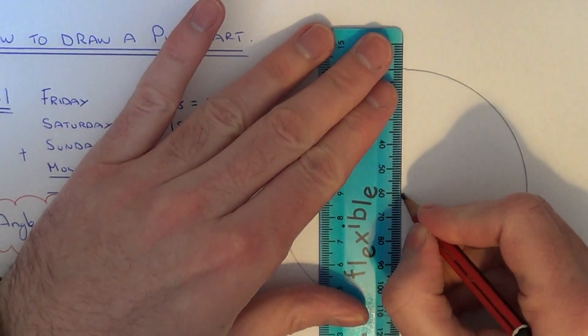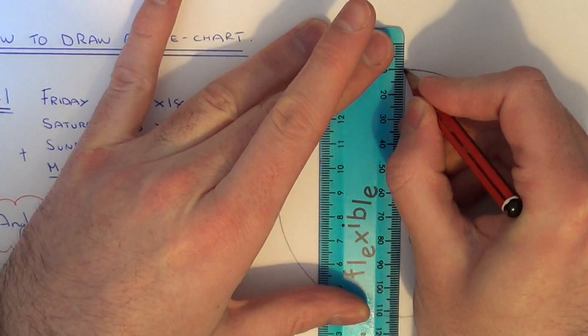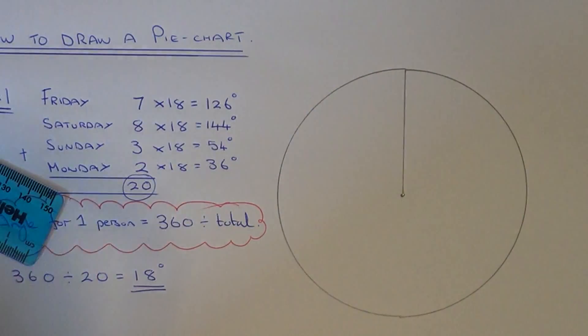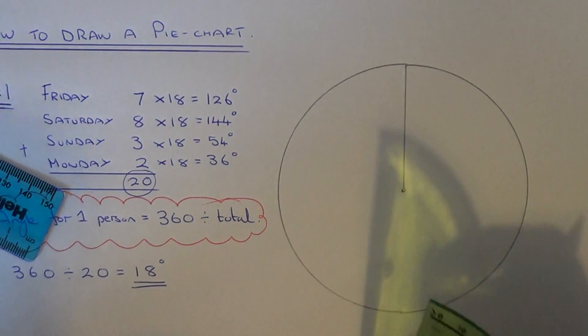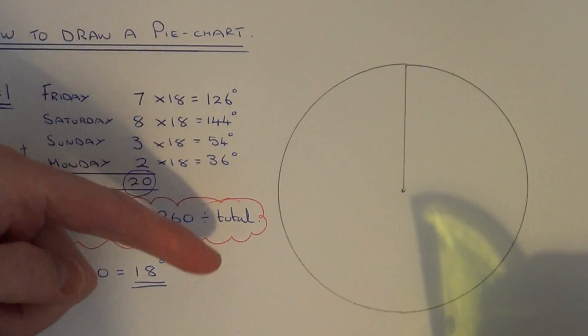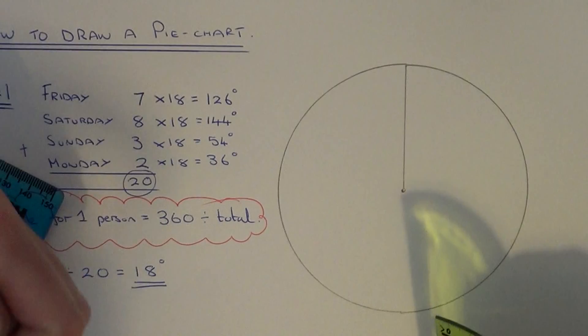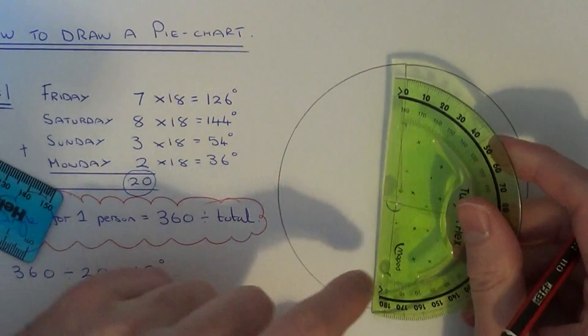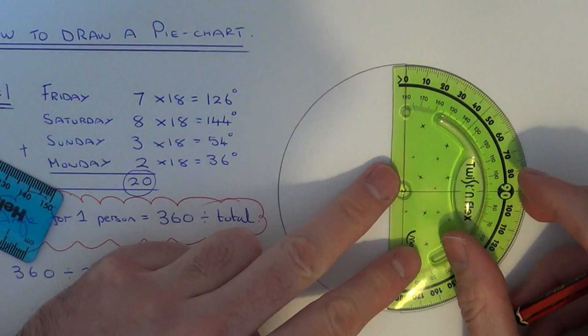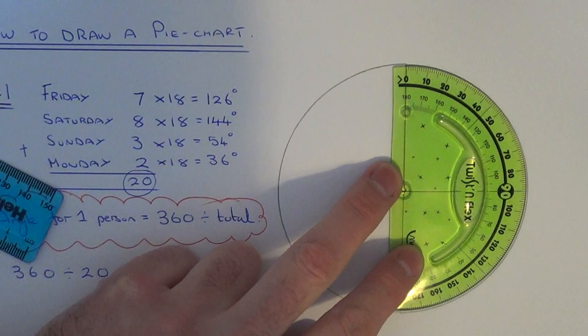So you just want a north line so you can measure your angles from. So our first angle is 126. It doesn't actually matter which order you do these in. I'm just going to go from top to bottom to make it easier.